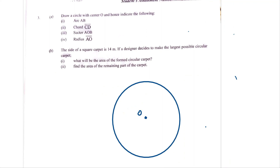So indicate from the circle arc AB. We're going to mark any two points — point A and point B. So basically this is arc AB.